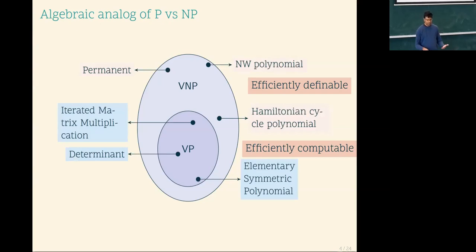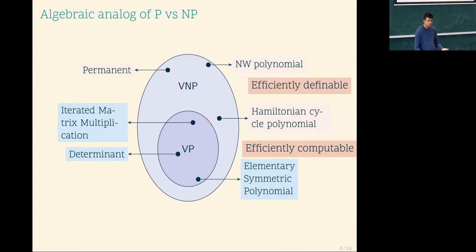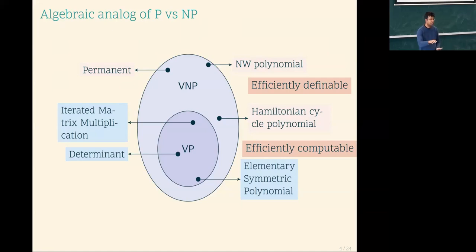This is a very wide open question. Permanent versus determinant has been studied in various contexts — by people in physics relating to statistical mechanics, by computer scientists because it relates to sharp P versus lower complexity classes, and by mathematicians because determinant and permanent are the two ends. This is again, like P versus NP, a very wide open question: where does easily computable stop and hard to compute start?